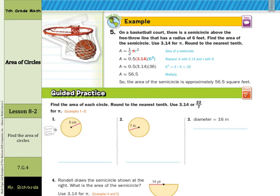And in our last example, on a basketball court, there's a semicircle above the free throw line that has a radius of 6 feet. Find the area of the semicircle and use 3.14 for pi, round to the nearest tenth. So for our semicircle, it's one half times pi radius squared. You can see where we made our substitutions in, and solved, and got the same exact answer we did in the last example, 56 and 5 tenths, but this time feet squared, or square feet.